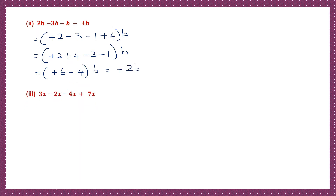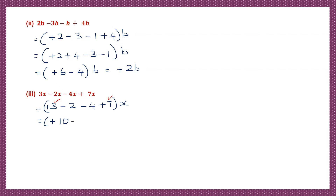Next question: 3x minus 2x minus 4x and plus 7x. So again like terms. Let's do that: 3 minus 2 minus 4 plus 7x. Let's add up the numbers with a plus sign — plus 3 and plus 7: 3 plus 7 is 10. Now take the other two with minus signs: 2 plus 4 is 6, so minus 6x. Signs are different — put the sign of the bigger number and subtract: 10 minus 6 is 4, so plus 4x.